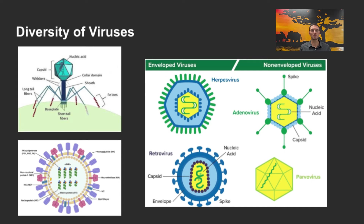RNA viruses have protein synthesis that occurs in a couple of different methods. In positive sense, the genes are used directly as messenger RNA. In negative sense, the genes are transcribed to make messenger RNA. In retroviruses, they make DNA copies of the RNA genes and then transcribe the negative sense strand of DNA to make messenger RNA. We'll talk more about sense strands of DNA when we get to DNA replication later.